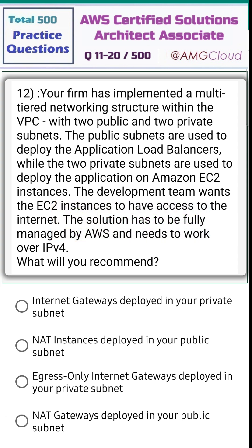Question 12. Your firm has implemented a multi-tiered networking structure within the VPC with two public and two private subnets. The public subnets are used to deploy the application load balancers, while the two private subnets are used to deploy the application on Amazon EC2 instances. The development team wants the EC2 instances to have access to the internet. The solution has to be fully managed by AWS and needs to work over IPv4. What will you recommend?